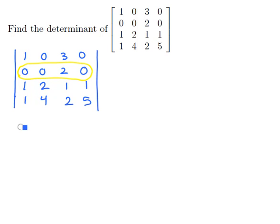Using this expansion, we know that we're going to have 0 times some 3x3 block of numbers, then another 0 times some 3x3 block of numbers, then 2 times some 3x3 block of numbers, and finally 0 times some 3x3 block of numbers.